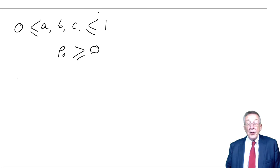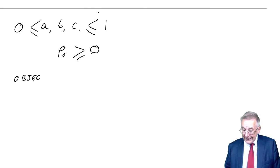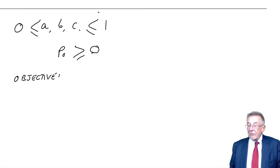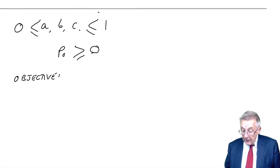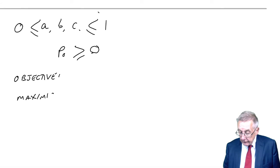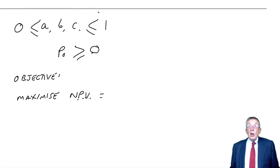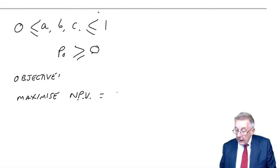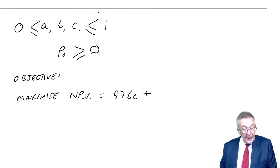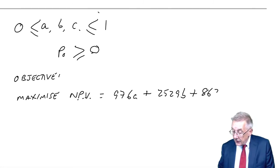Those are the limits. Any values we end up with for A, B, C and P0 must satisfy those inequalities. Finally, though, we need to set out what the objective is. The objective is to get the maximum total NPV. What will the NPV be? I've already said before, if we did half of A, we'd get half of the total NPV. If we do A of A, the NPV will be 976A, 2529B, 862C.